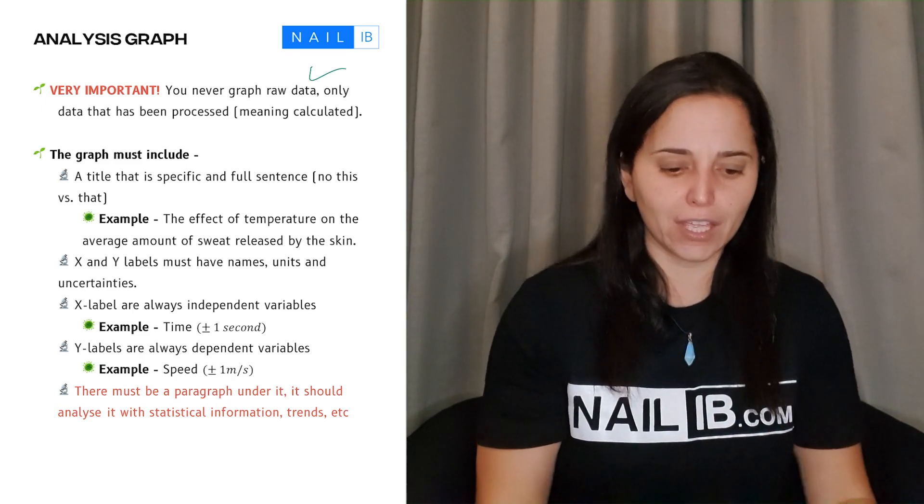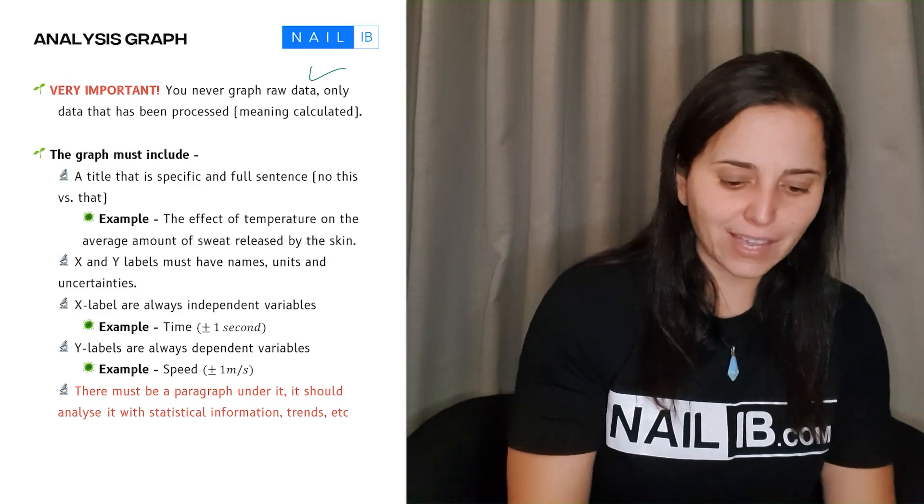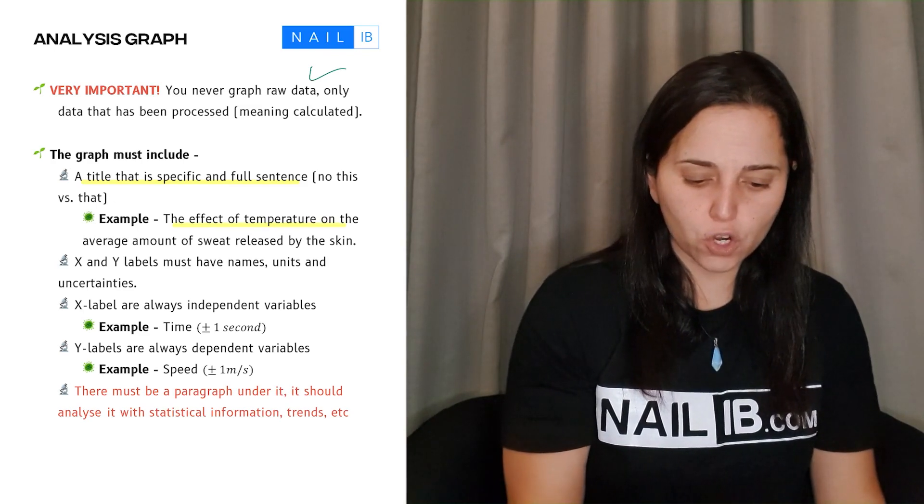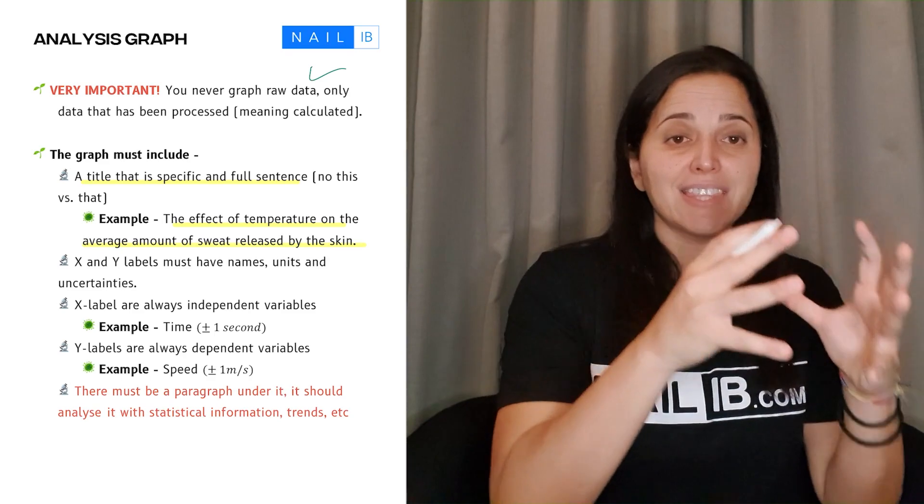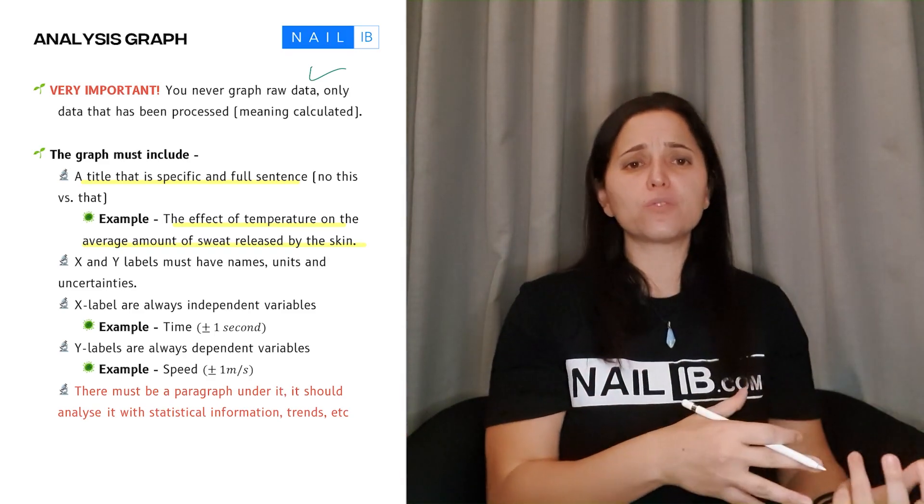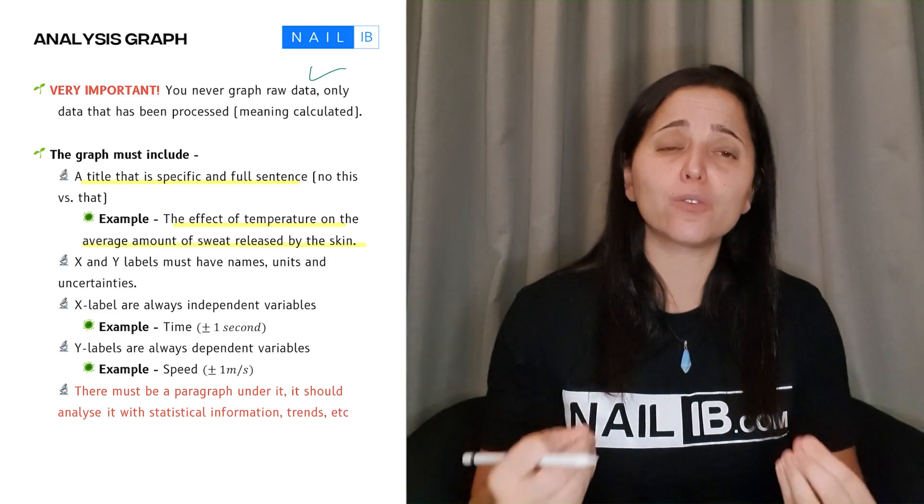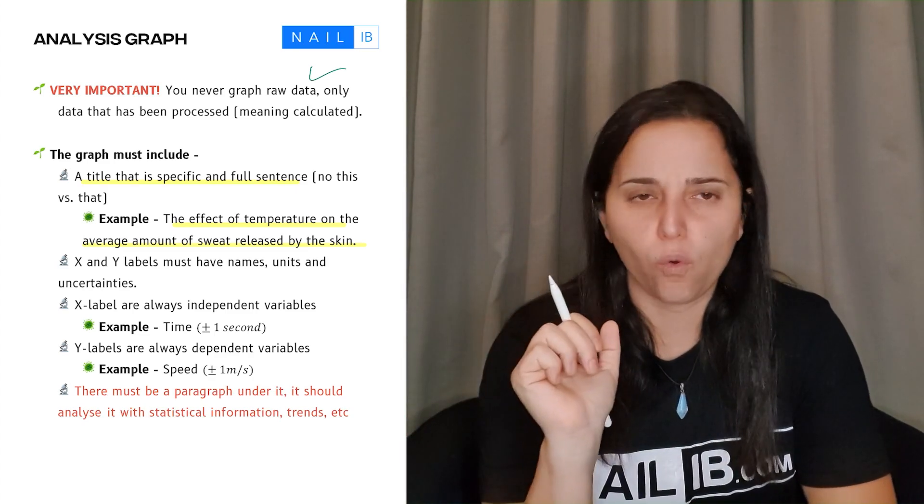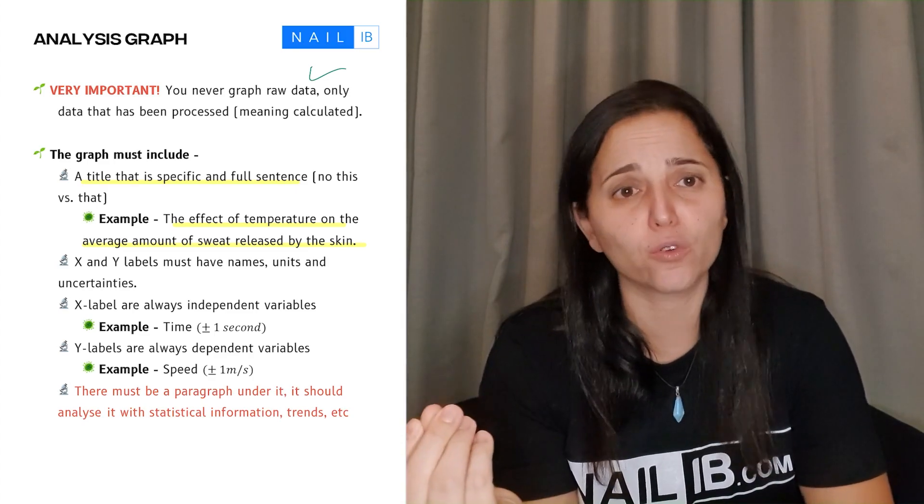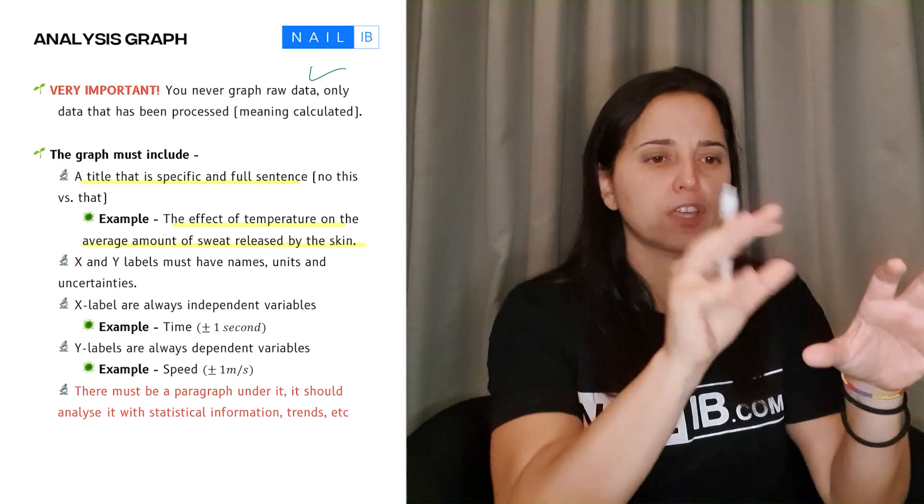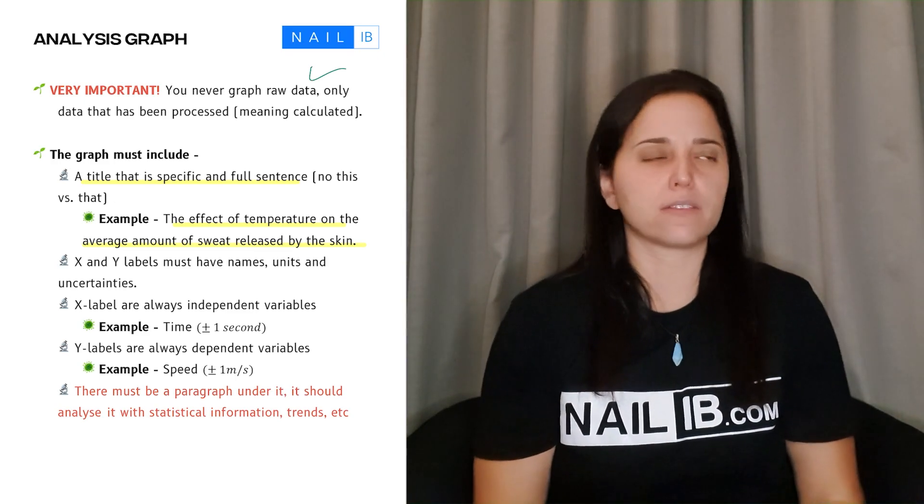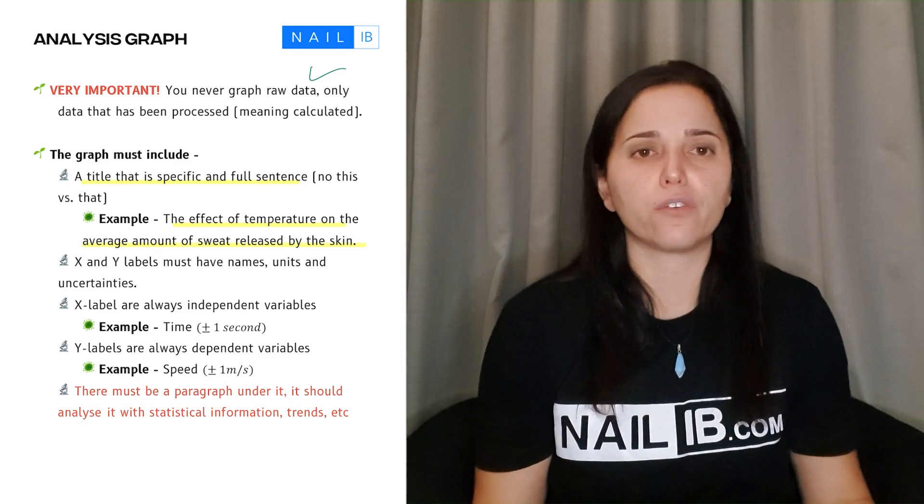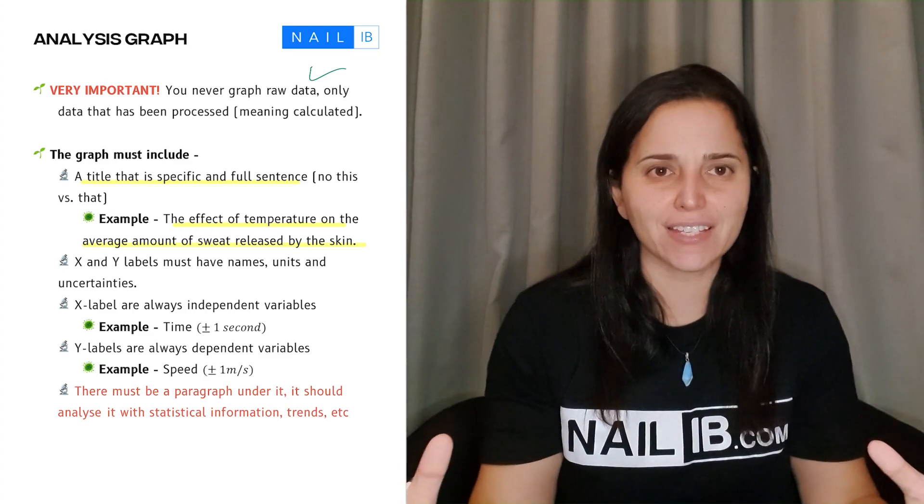What are the things that you must include in your graph? One of the first things that you must include is a title and a specific and full one. For example, the effect of temperature on the average amount of sweat released by skin. So you're telling me the independent and the dependent, just like you did with the tables on the raw and the processed data. Make sure you have a title to your graph. Do not put this versus that, temperature versus growth. That's middle school titles. You have to be specific. The effect of temperature on the growth rate of a certain plant. You have to be in full sentence, your titles.